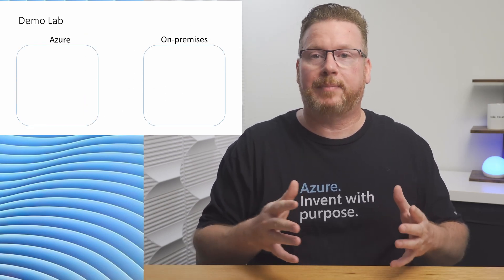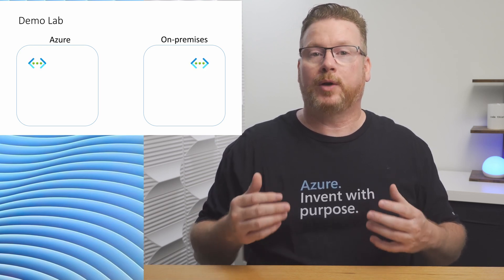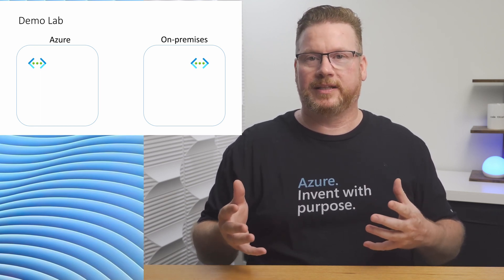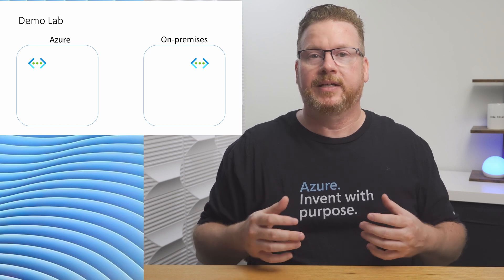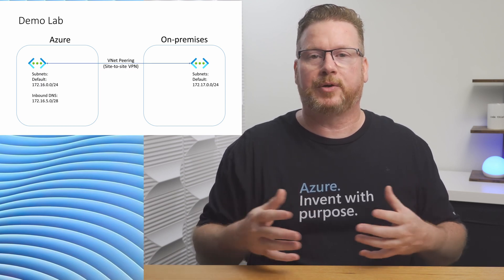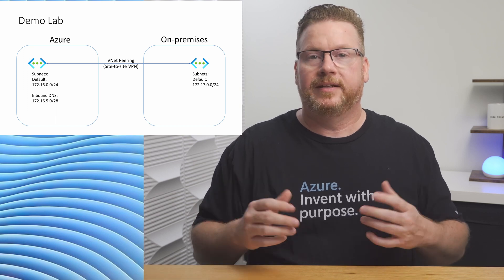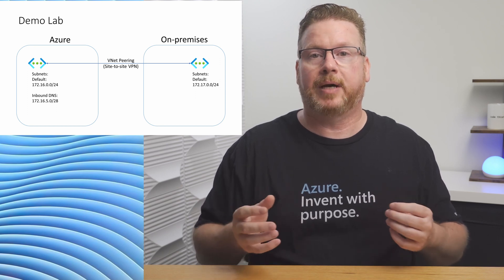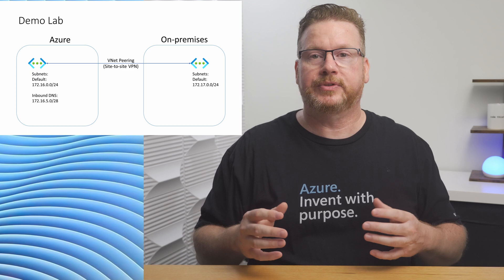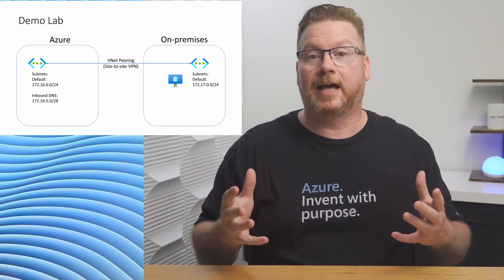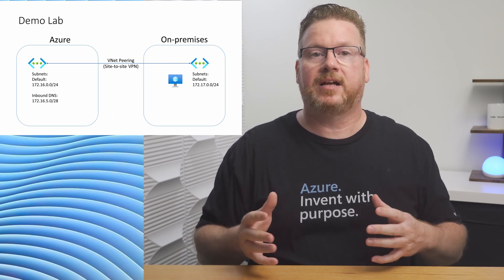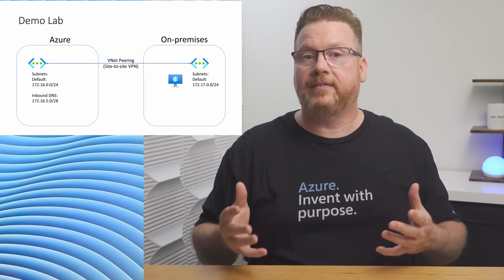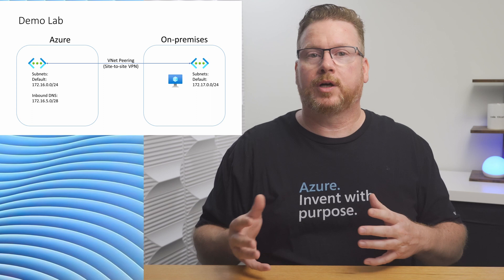Let's get a quick overview of the lab for this demo. The lab consists of two VNets: one represents Azure resources, the other represents our on-premises environment. We're using VNet peering as a stand-in for an ExpressRoute or VPN connection — the principles are the same. The Azure VNet has a default subnet and a smaller /28 subnet dedicated to the inbound endpoint. /28 is the smallest we can use. There's a server on the on-premises VNet with Windows DNS installed, configured to use itself for DNS lookups.